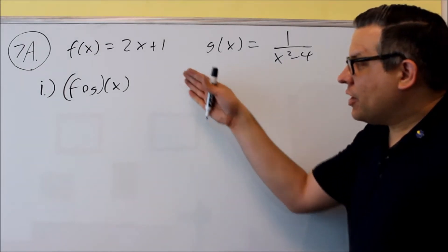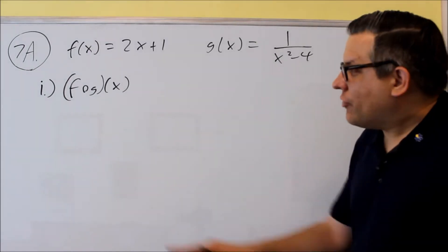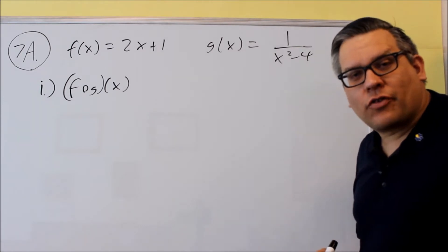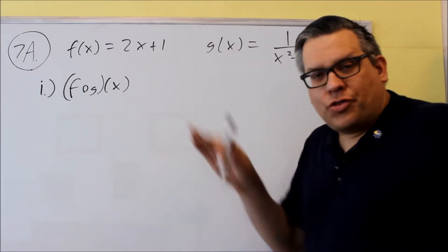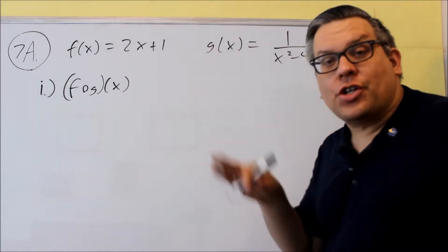Number 7, it'll be f of g and g of f. So we're going to do this one first, we're going to do f of g of x. So no numerical ones, we'll just be f of g and g of f.